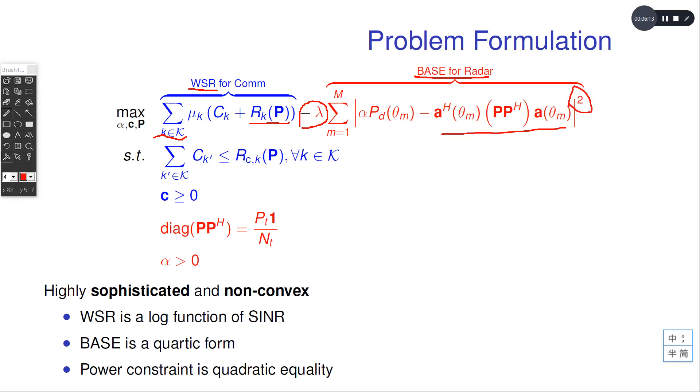What's more, we also have a quadratic equality in our constraint. All these non-convex and complex parts make the problem intractable.